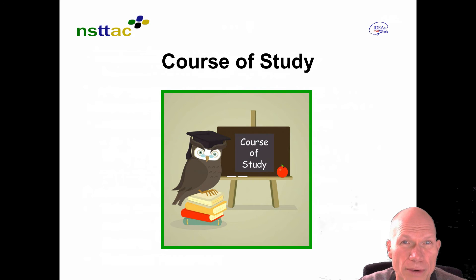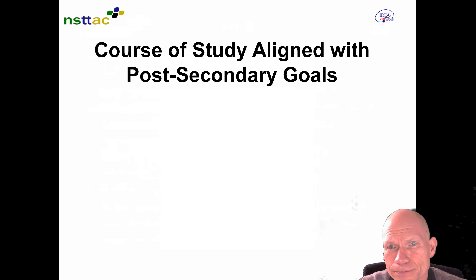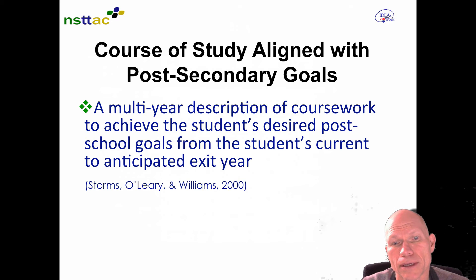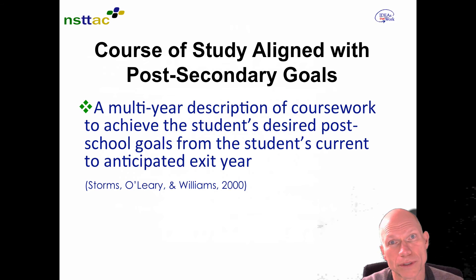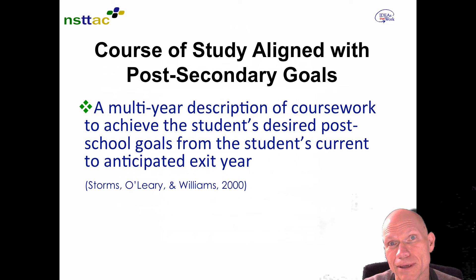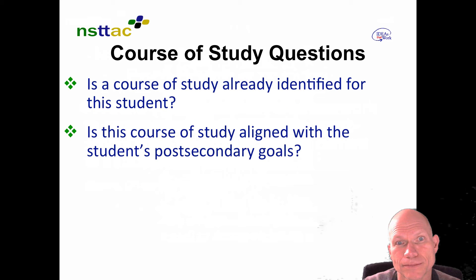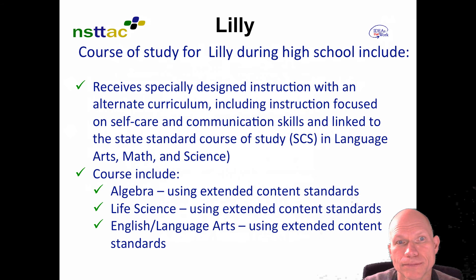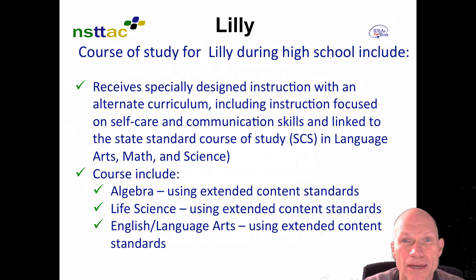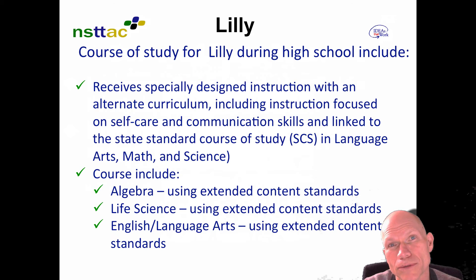Course of study is another required element of a transition plan. The course of study is supposed to be aligned with post-secondary goals — you take a look at the courses a student will take during their high school career and how they relate to the post-secondary goals, then list those courses. Not all courses may apply, so think carefully about which ones are relevant and impact a student's post-school goals.